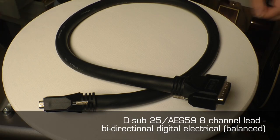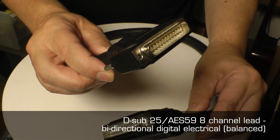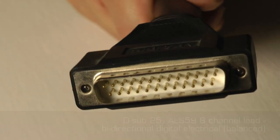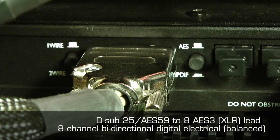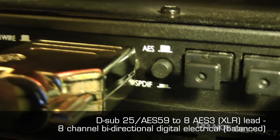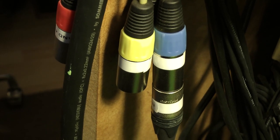This is a D-sub-25 or AES-59 lead. It's eight-channel bi-directional in and out, digital electrical signal. This is a D-sub-25 AES-59 breakout cable going to eight AES-3 connectors, so it's four times two-channel pairs, digital electrical, balanced.